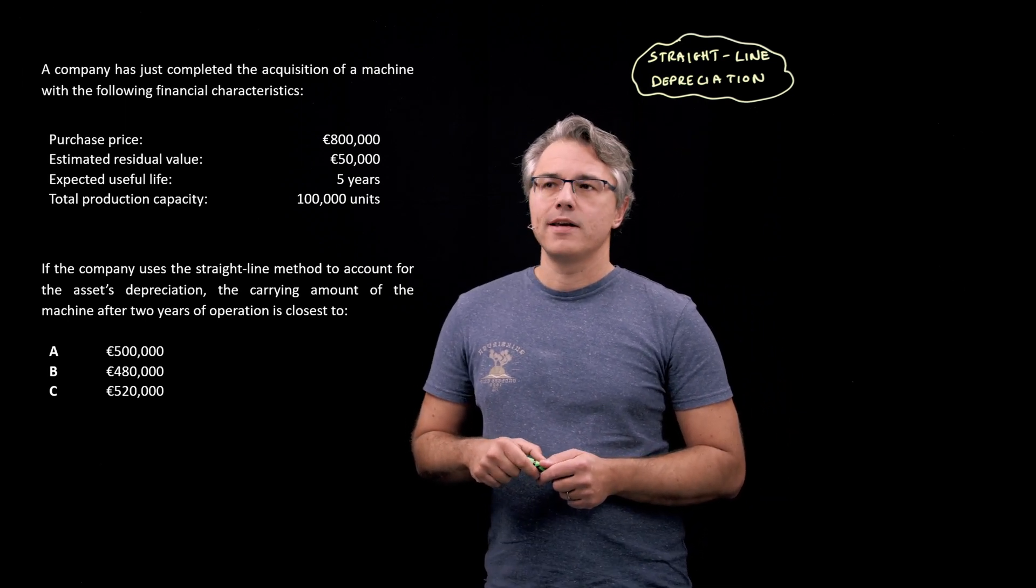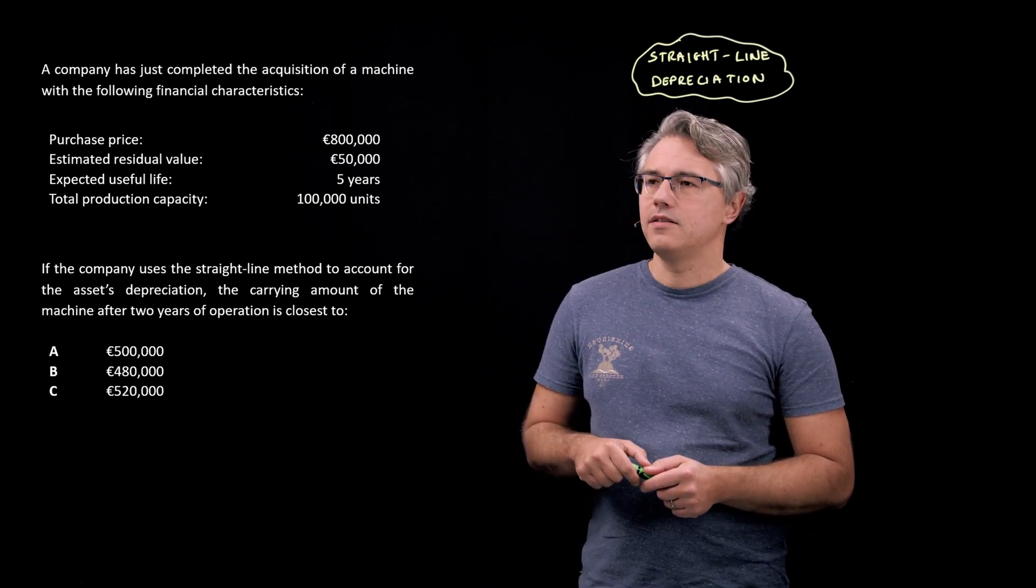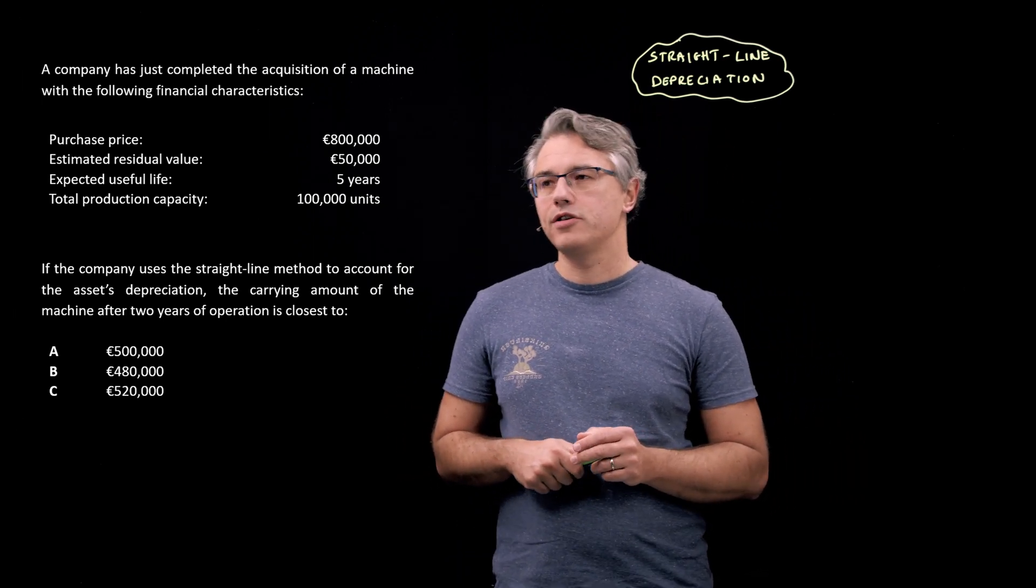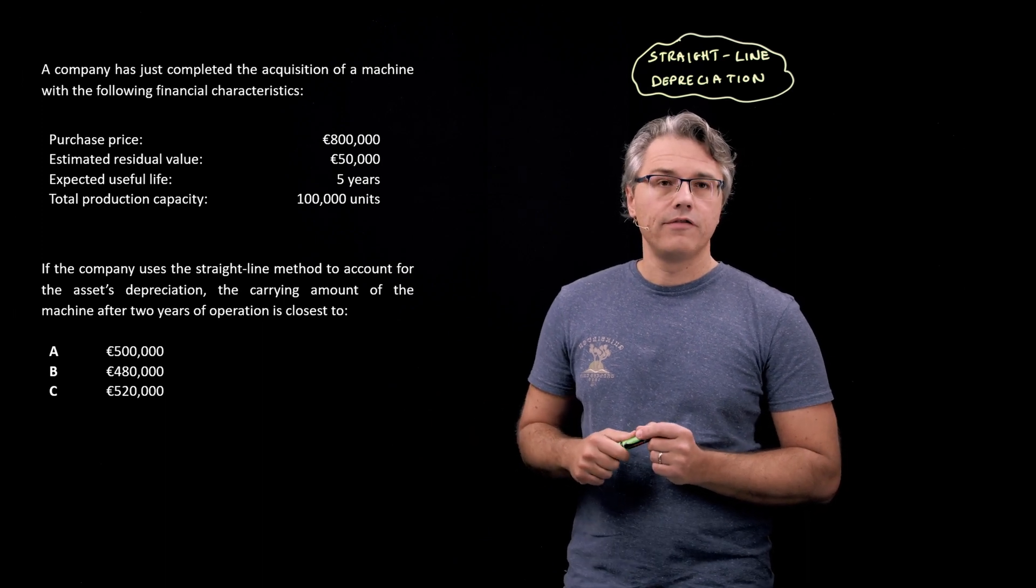If the company uses the straight-line method to account for the asset's depreciation, the carrying amount of the machine after two years of operation is closest to, and three options follow.